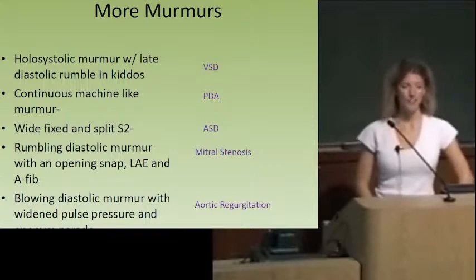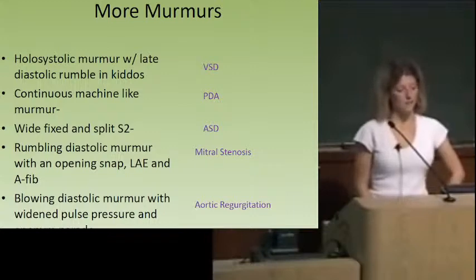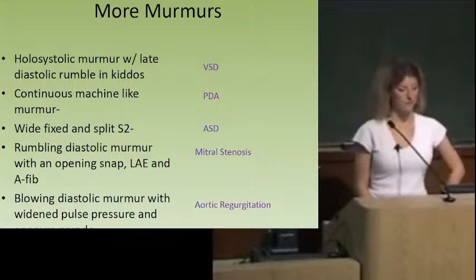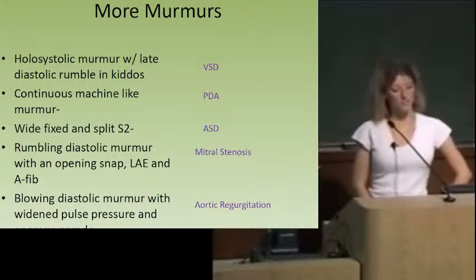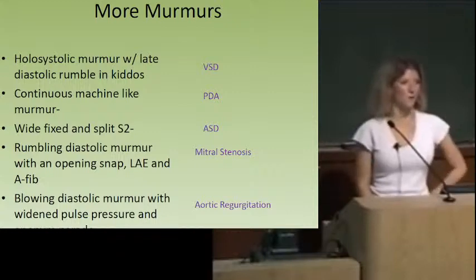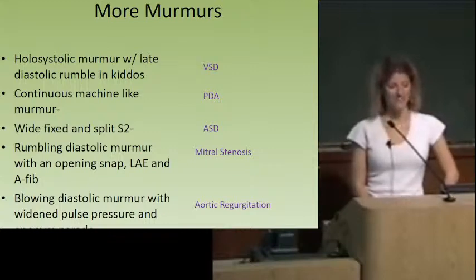A rumbling diastolic murmur with an opening snap — if you did an echo you might see left atrial enlargement, and it predisposes to AFib. That's mitral stenosis. A blowing diastolic murmur with a widened pulse pressure — the one with the water hammer pulse — that's aortic regurgitation. Mitral stenosis and aortic regurgitation are the two most important diastolic murmurs in the adult population.